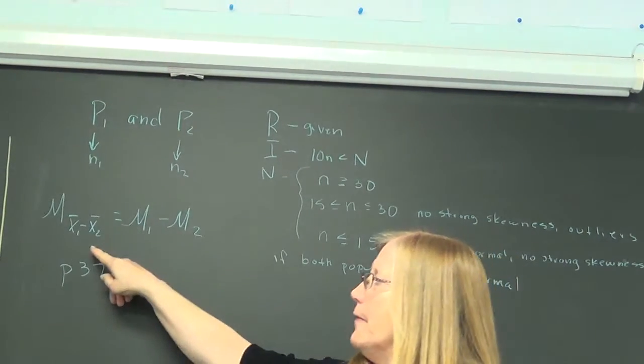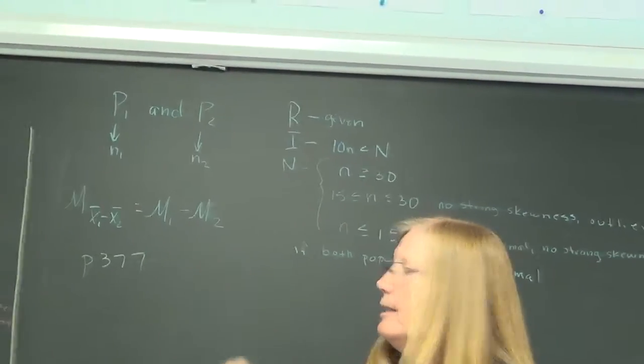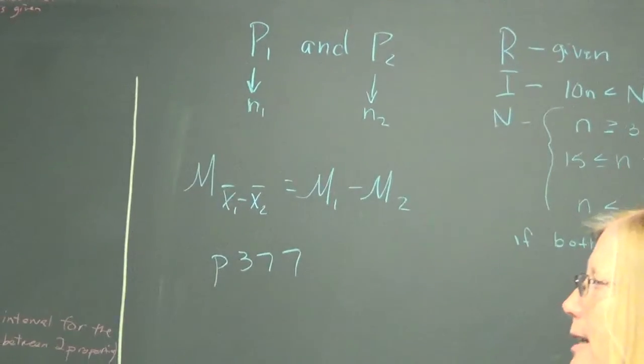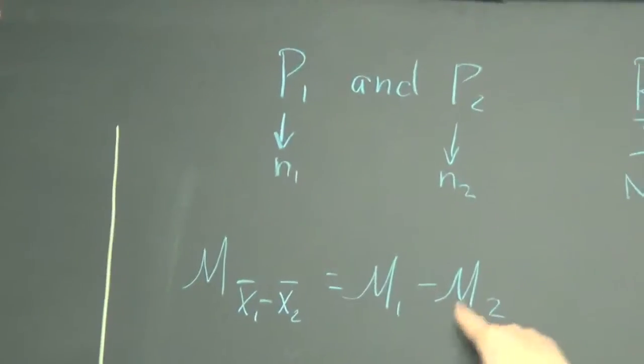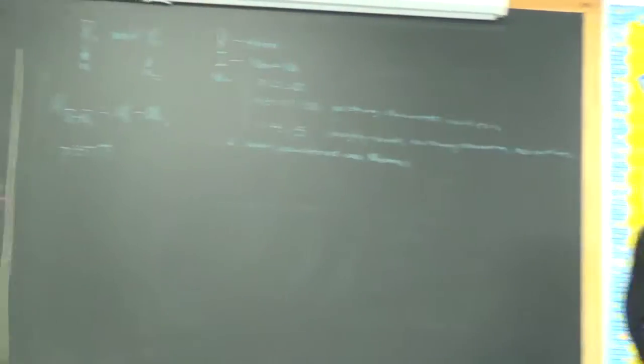The mean, the difference of two samples is the mean of the first population minus the mean of the second population. So, we're looking, the only thing left, this was shape, center, and spread. I've asked everyone to turn to page 377 and observe, if you would.